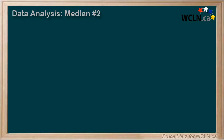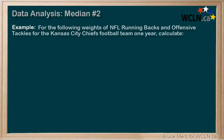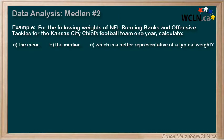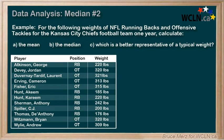Let's try another example on calculating the median. For the following weights of NFL running backs and offensive tackles for the Kansas City Chiefs football team one year, calculate the mean, the median, and then determine which of the above is a better representative weight for a typical player. Here are the players and their weights — go ahead and pause the video now and try to answer questions A, B, and C.